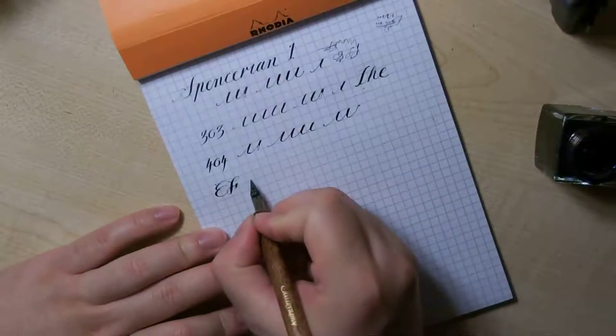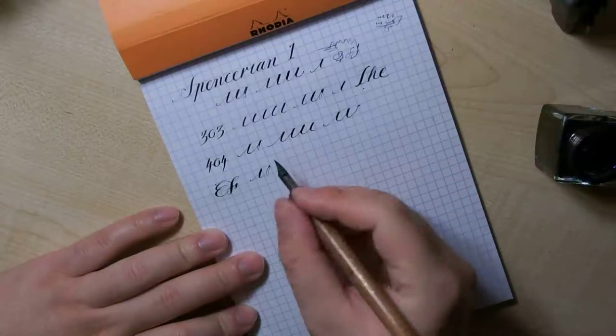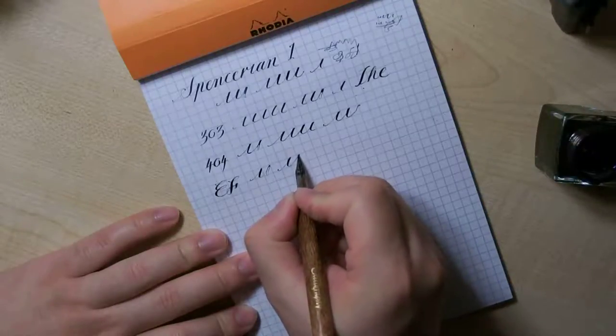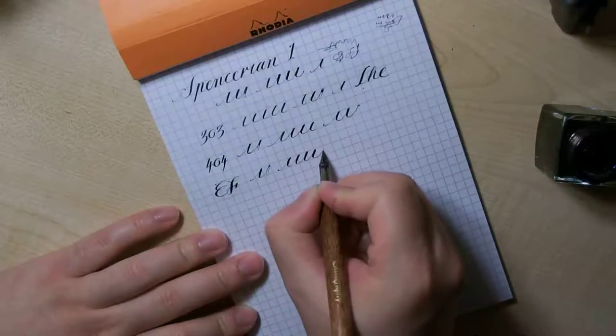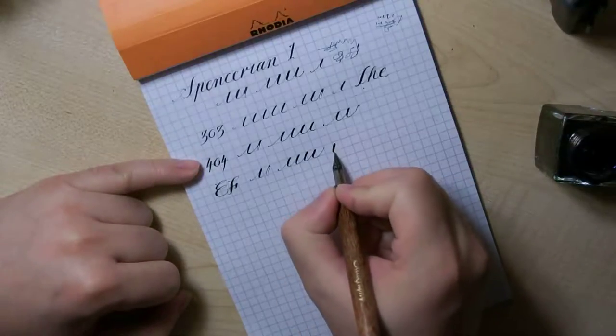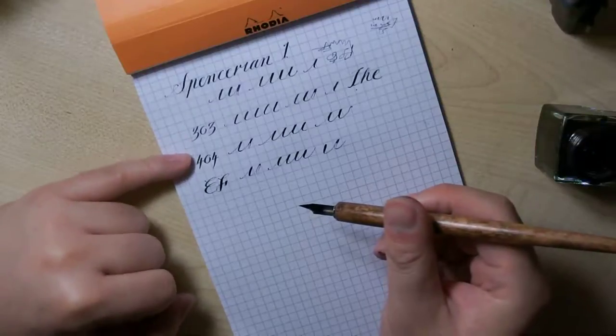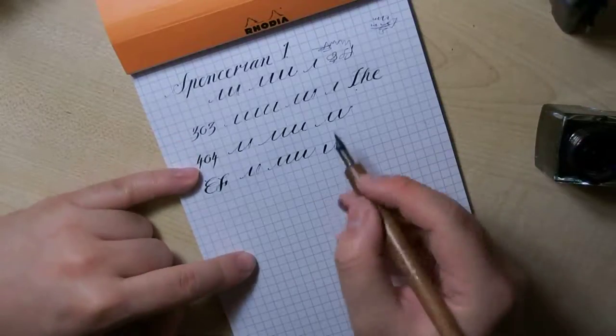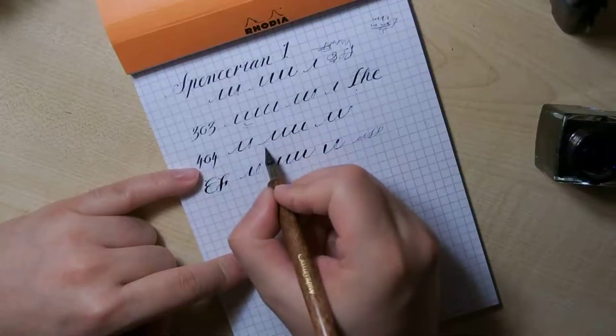So far so good, it's thin, very scratchy, not holding a lot of ink. I would say it's somewhere between the 303 and the 404 but it's slightly more flexible, slightly more flexible than the 303 and the 404, but the line variation is somewhere in between. The thin line is not as thin as the 303 but it's not as thick as the 404, somewhere in between.